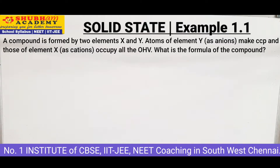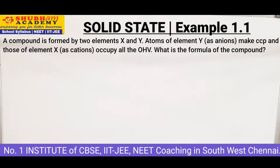Hello and welcome to today's class. In today's class we are discussing Example 1.1 of Chapter 1 of Solid State Chemistry of Class 12th. The question says: a compound is formed of two elements X and Y. Atoms of element Y as anions make CCP, and those of element X as cations occupy all the octahedral voids. What is the formula of the compound?